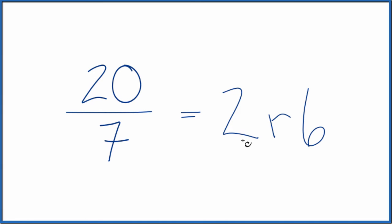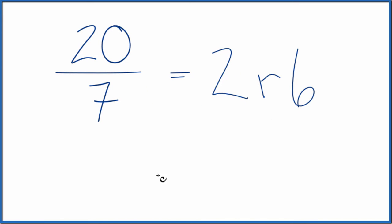So twenty-sevenths, the fraction, is equal to 2, remainder 6. So to get this to an improper fraction, a mixed number, we can do this.